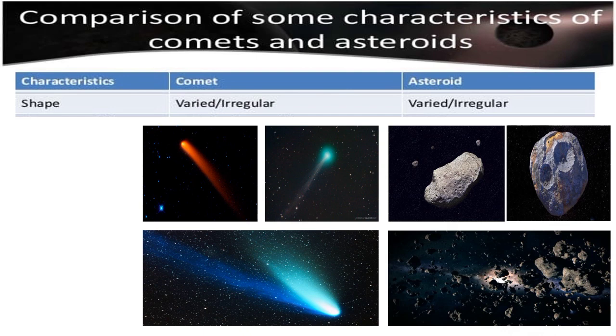Comets come in varied or irregular shapes same as with asteroids as observed in sample pictures below.